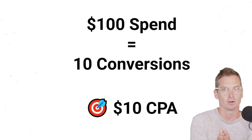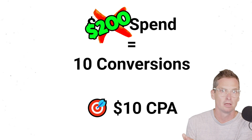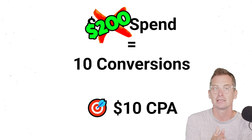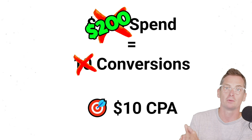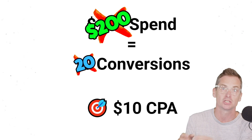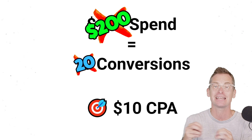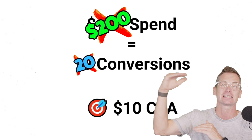Getting 10 conversions and moving to $200 a day, we would hope that it would bring in 20 conversions — the same exact efficiency that we can scale.